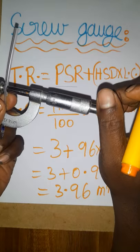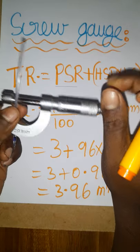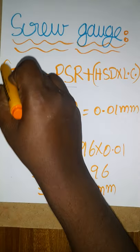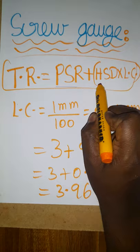Hello students, today I'm going to teach you how to find the diameter of this refill using a screw gauge. The screw gauge formula is: pitch scale reading plus edge scale reading times least count.